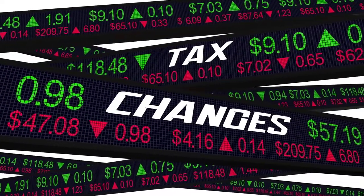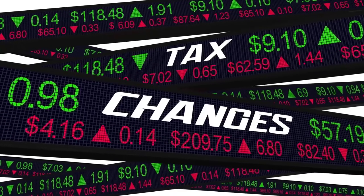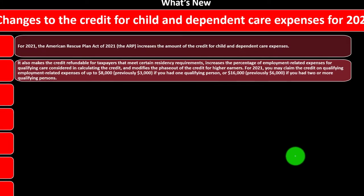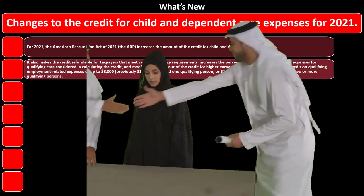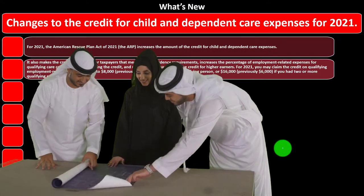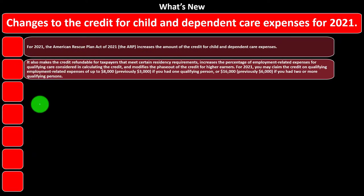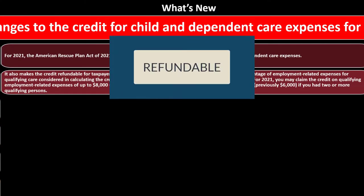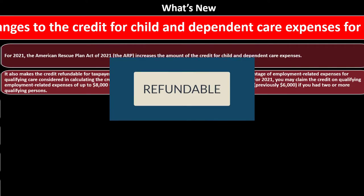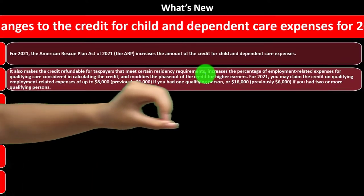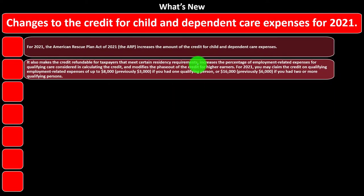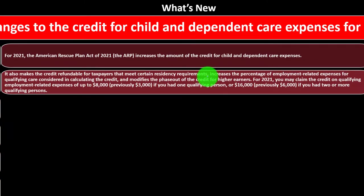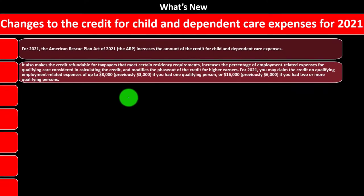Note that tax years will change, especially through this time frame, as laws are going through a fluctuating period. We also want to be able to deconstruct what is happening so we can explain it to clients and ensure no mistakes in preparation. The ARP also makes the credit refundable for taxpayers that meet certain residency requirements, and increases the percent of employment-related expenses considered in calculating the credit.